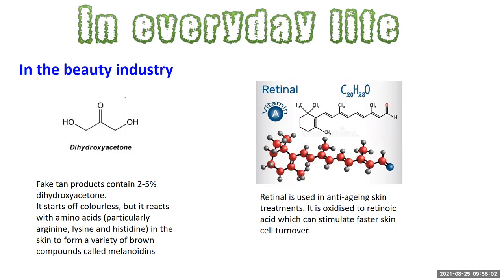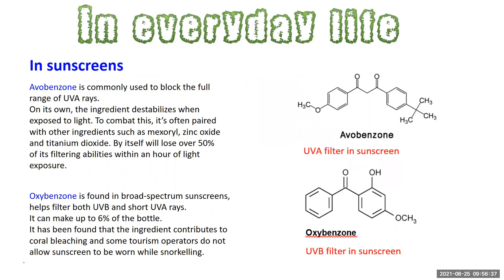In the beauty industry, dihydroxyacetone — a ketone used in fake tan products — starts off colorless but reacts with amino acids in the skin to produce brown substances, giving the appearance of a tan. Retinol, a form of vitamin A used in anti-aging skin treatments, is oxidized to retinoic acid, which stimulates faster skin cell turnover for a more youthful appearance. It's also used in sunscreens — avobenzone acts as a UVA filter.